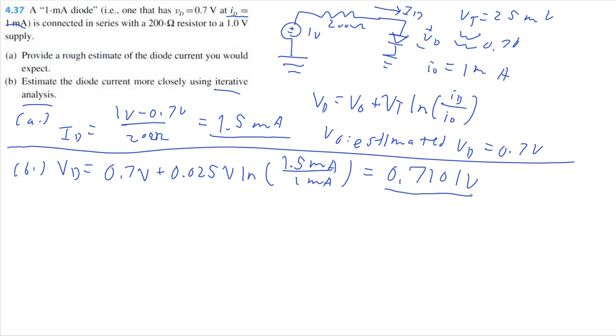Taking my calculator out, getting 0.7101 volts. So, we can already observe that our voltage across the diode is greater than the originally estimated 0.7 volts.